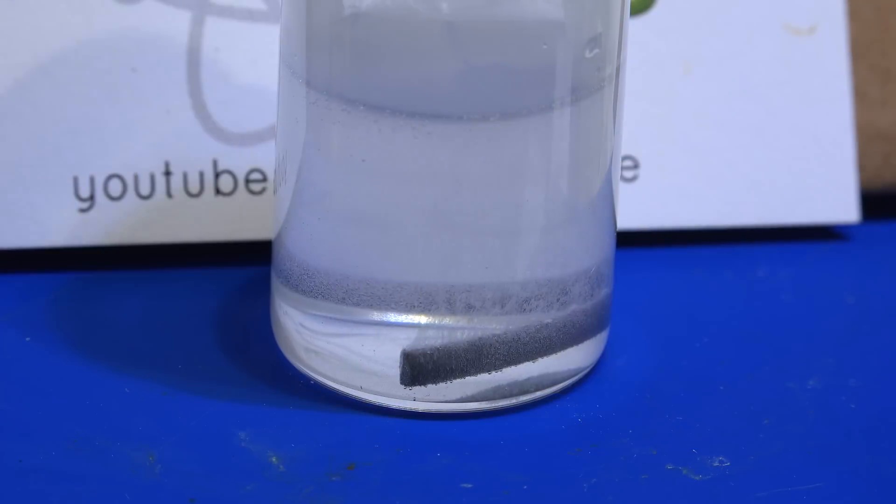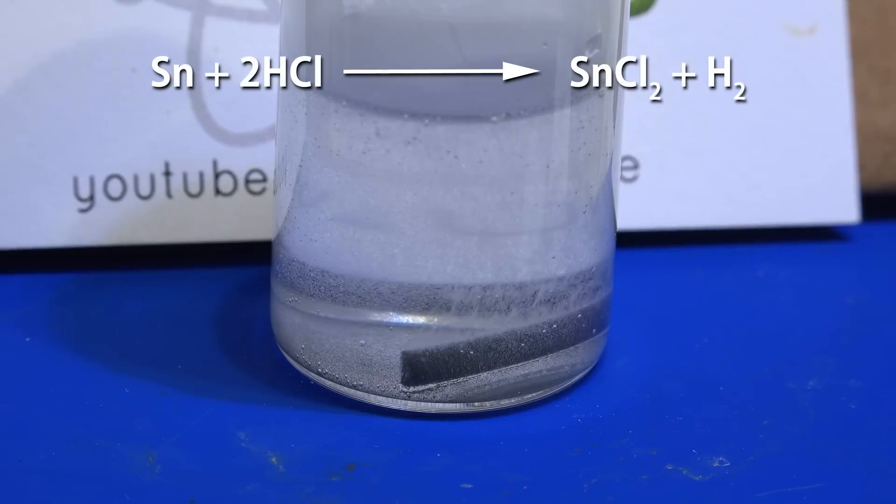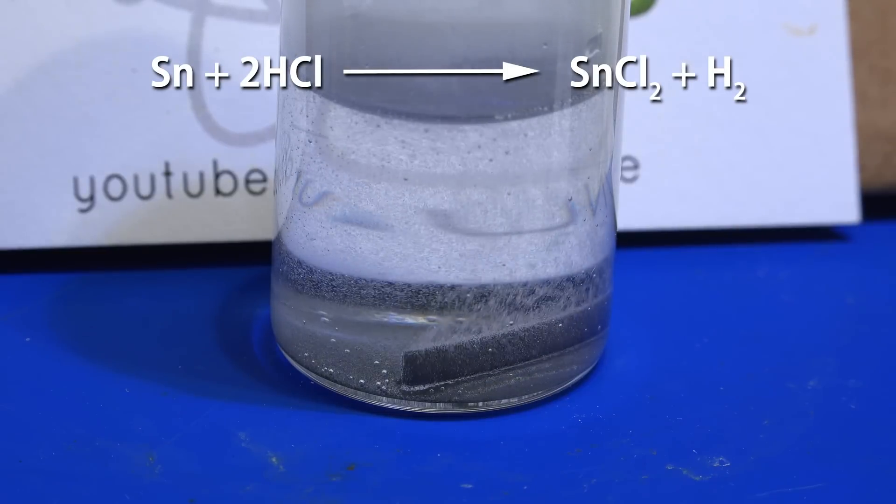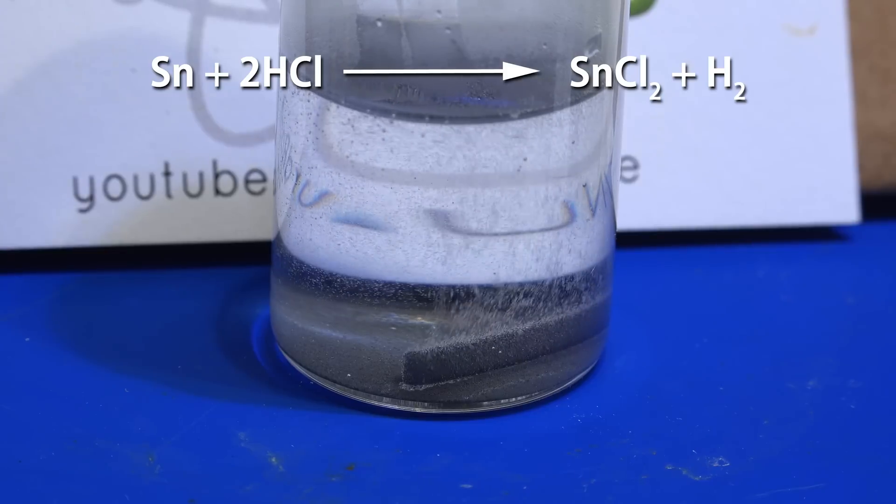Let me zoom in for a better look. What's happening is the tin is reacting with the hydrochloric acid to make hydrogen gas and tin chloride.